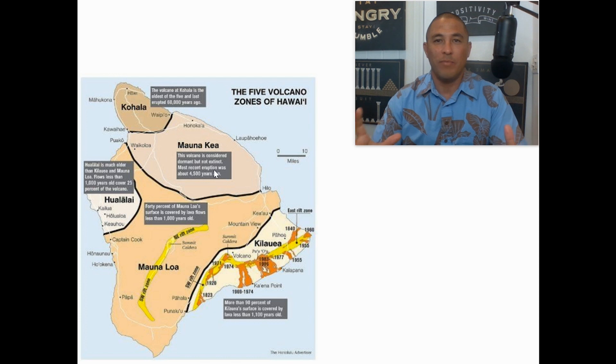Starting up on the north point, you have the Kohala mountains which is considered extinct at this point. Then you have Mauna Kea which is considered dormant, not extinct, but it's been 4,500 years since it has erupted. And you have Hualalai over here on the Kona side, which is where I live, and that one is still technically active.